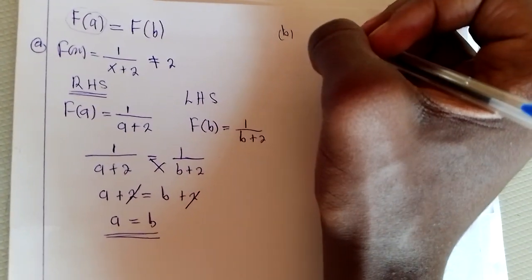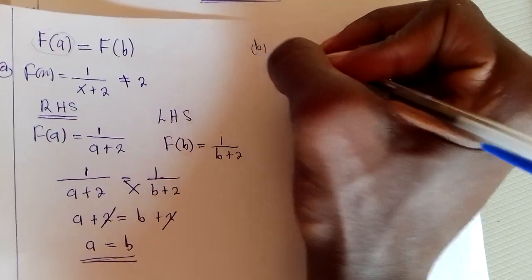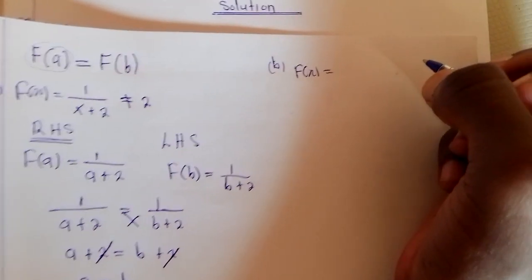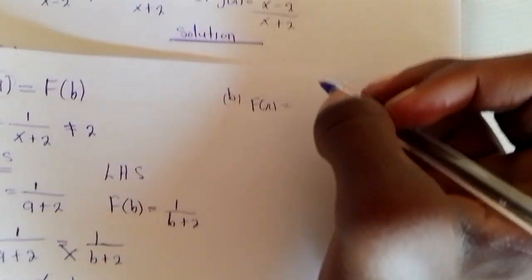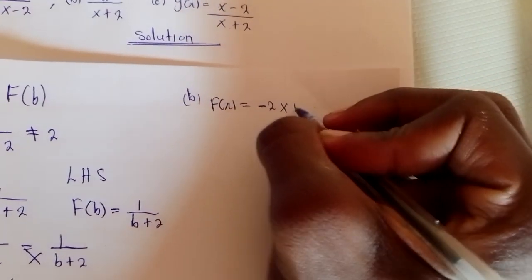B is saying, the function of F of X, this must equal negative two X plus three.